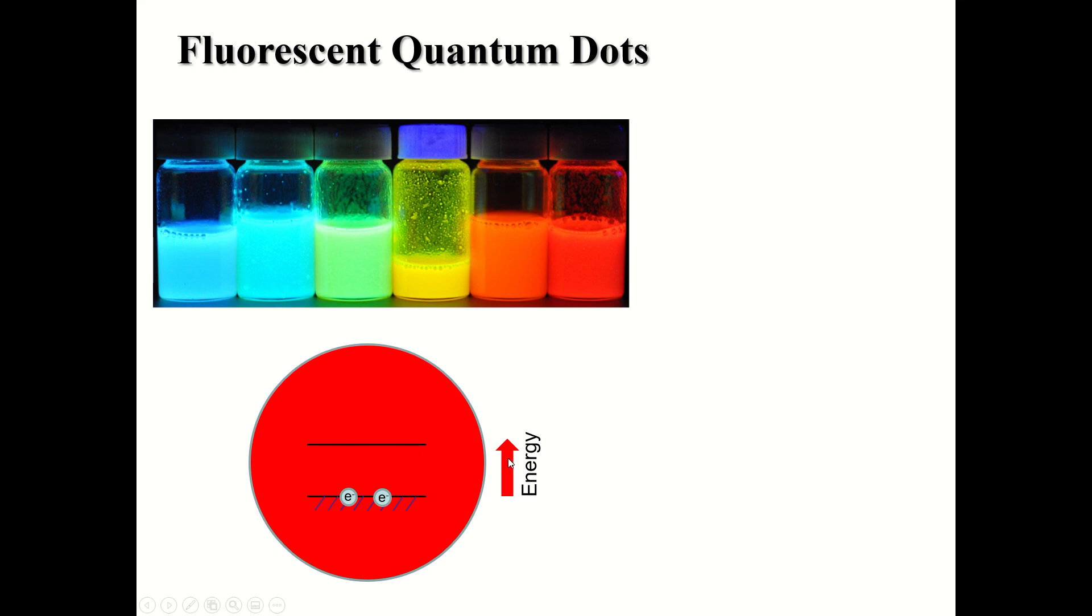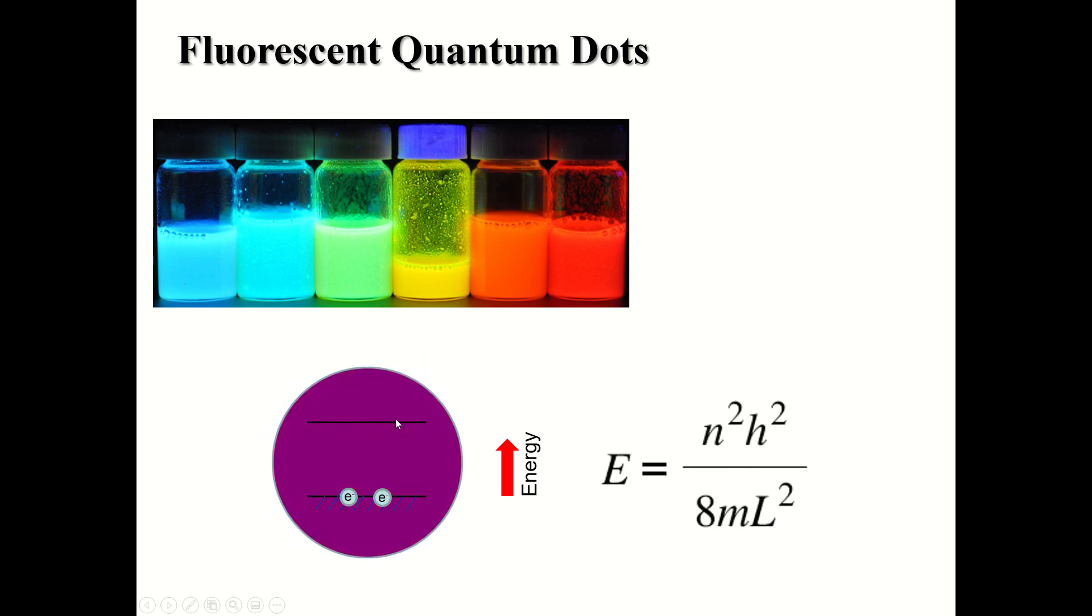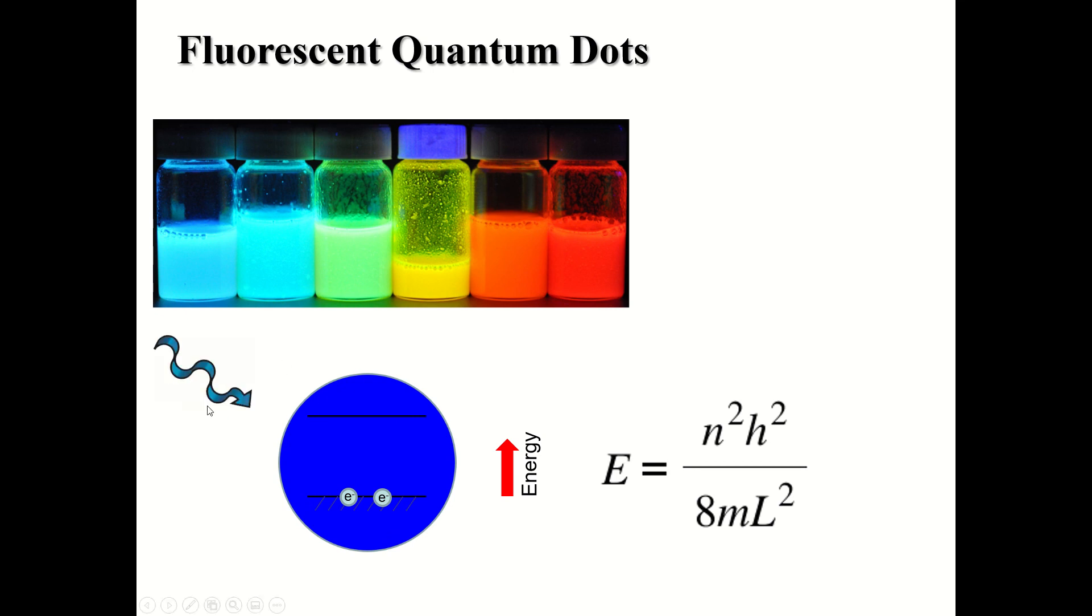All right, now, particle in the box says that these energy levels depend on the size of the box. So if the box gets smaller, the energy levels will rise. So watch this. You see that energy rises as the box gets smaller. So that means that you're going to need a higher energy blue photon to cause that electron to get excited to that higher state.